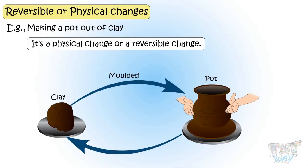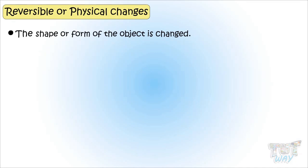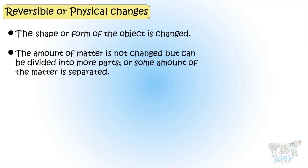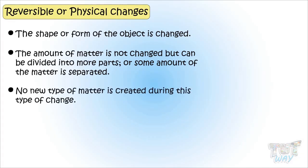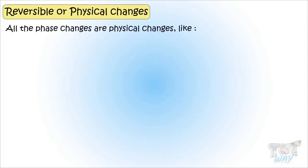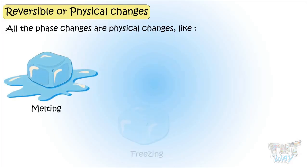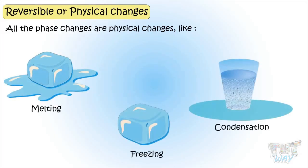So we learned that physical changes are where the shape or form of an object is changed. The amount of matter is not changed, but can be divided into more parts or some amount of matter is separated. No new type of matter is created during this type of change. All phase changes are physical changes — like melting, freezing, and condensation.